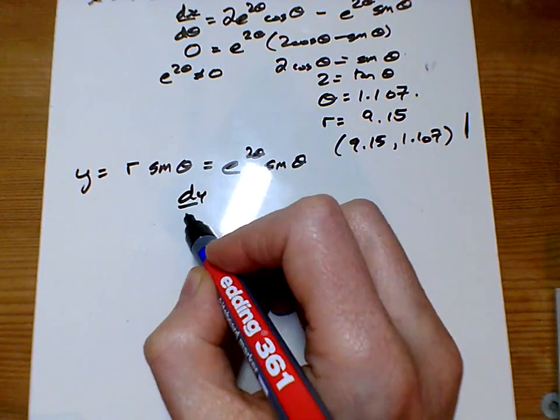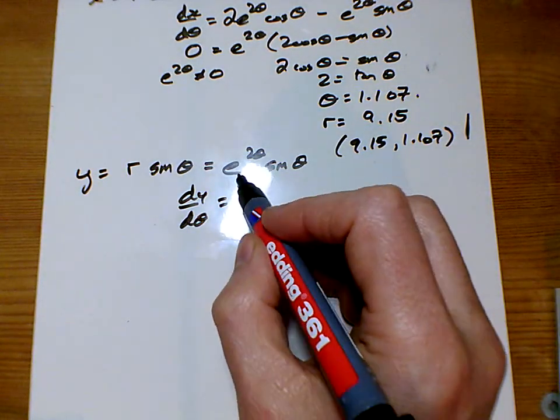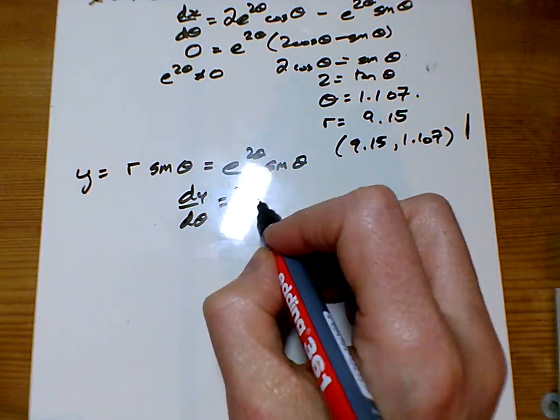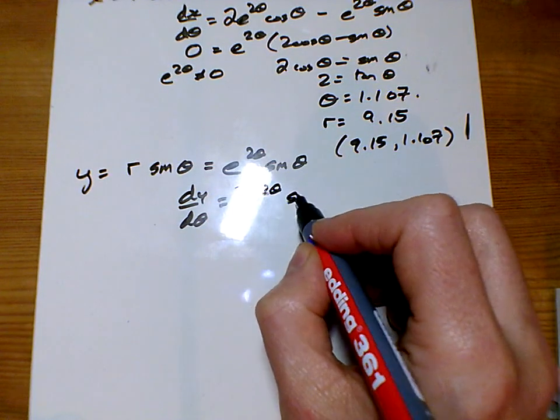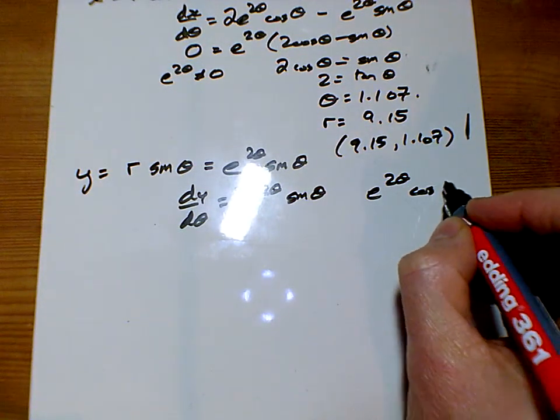And we're going to differentiate that one as we did before. So using a product rule, I'm differentiating the first one and writing the second one down. I'm writing down the first one and differentiating the second.